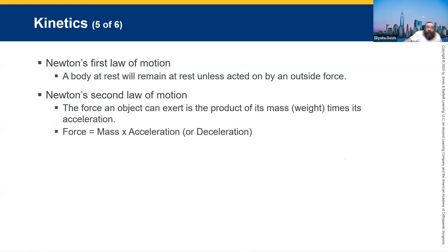Newton's first law of motion states that a body will remain at rest or will remain moving unless acted on by an outside force. The sign will stay at rest — it won't move unless a force acts on it. So when people say the tree jumped out in front of them, not really — the tree remains at rest.